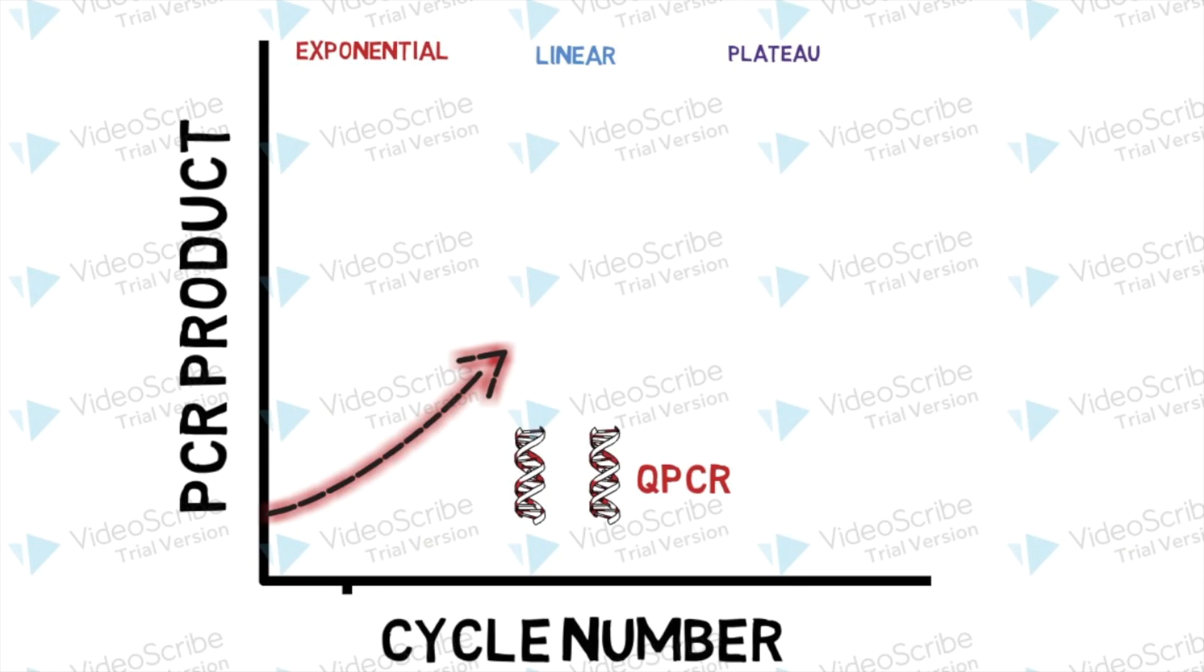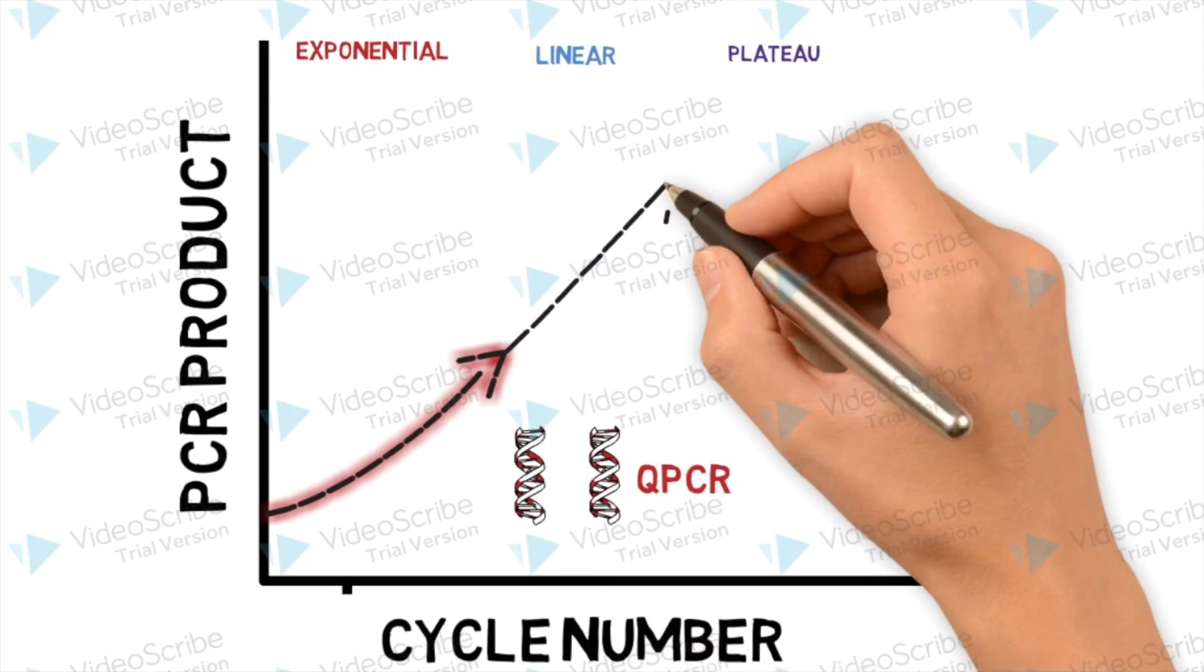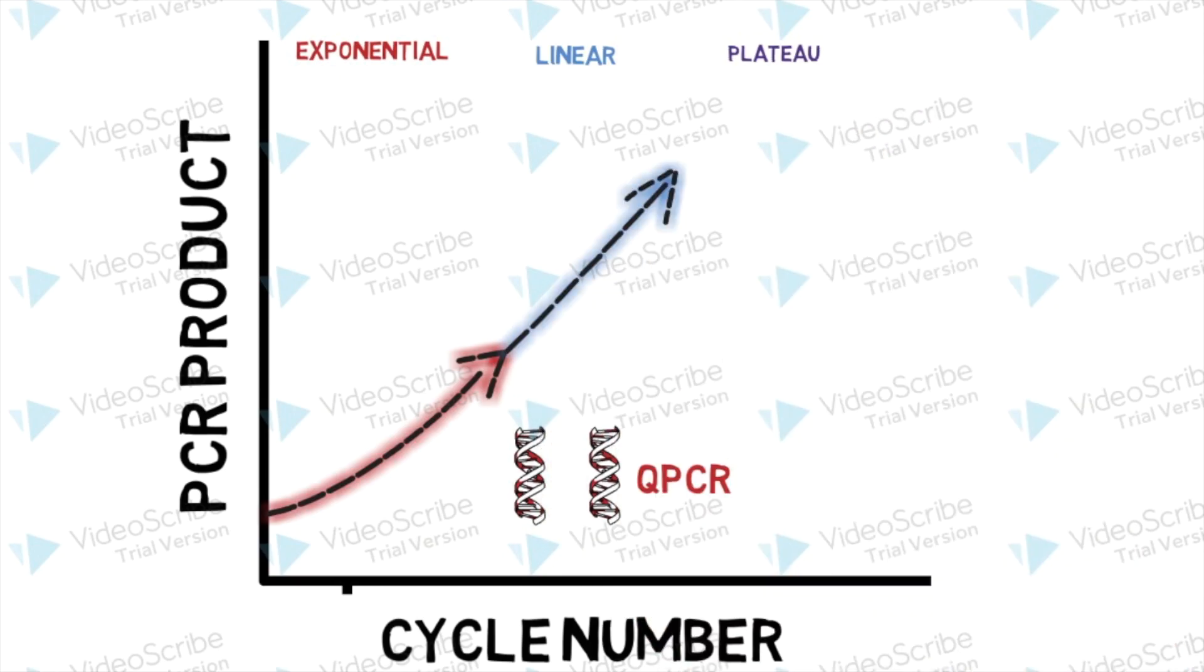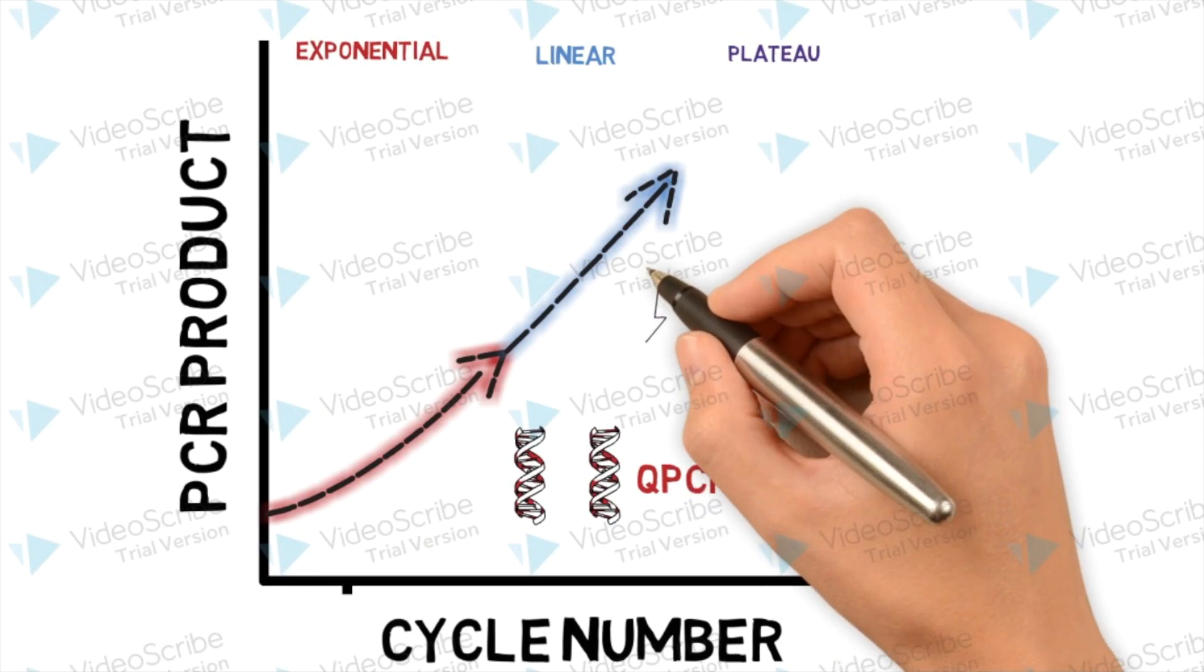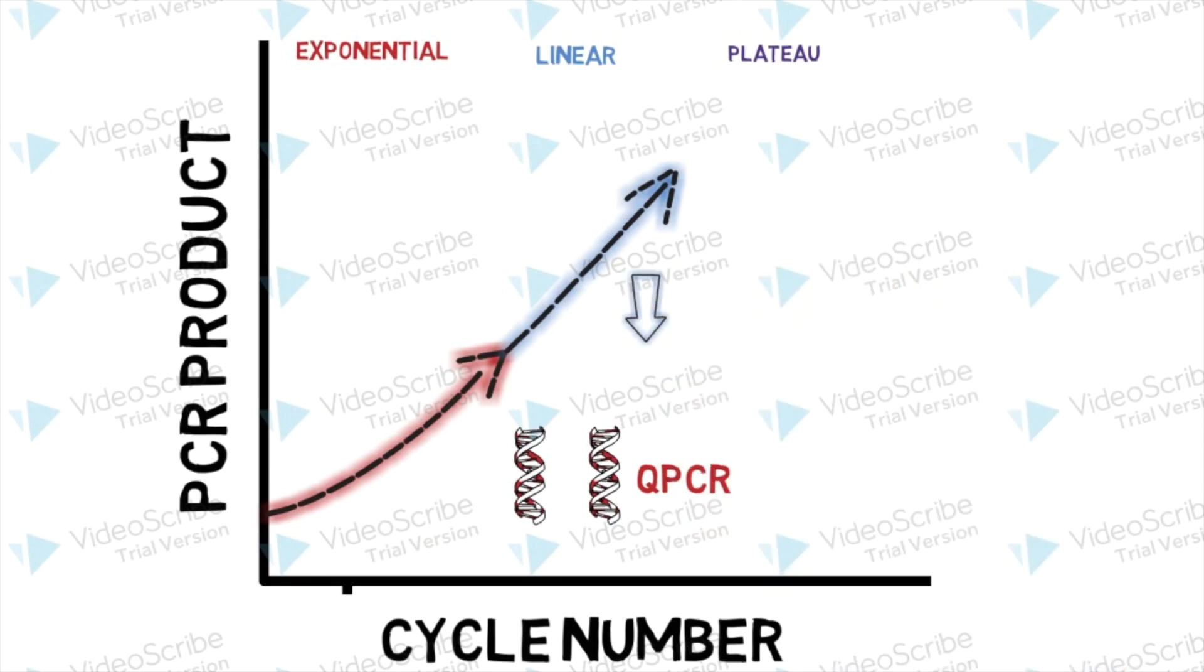In later cycles, around cycle 30 to 35, the reaction enters linear and plateau phases where there may be depletion of critical reagents such as DNTPs. This slows down and eventually stops PCR amplification. PCR products can also begin to degrade.